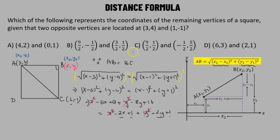Therefore, option C is the correct answer. Vertex B has coordinates (9/2, 1/2) and vertex D has coordinates (-1/2, 5/2).